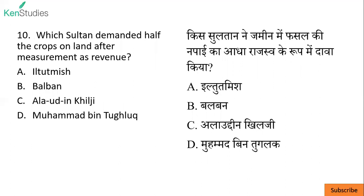Which Sultan demanded half the crops on land after measurement as revenue? The answer is Alauddin Khilji. He was the first medieval king of India who kept a standing army.